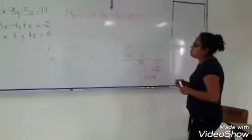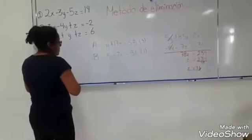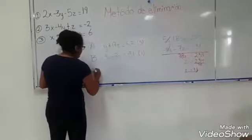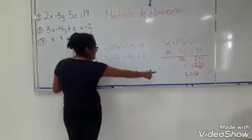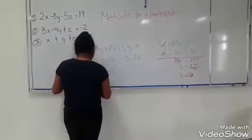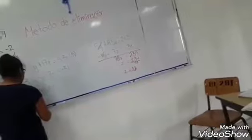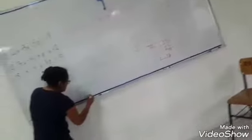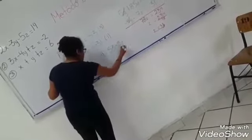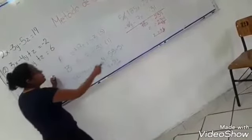Ya teniendo el valor de Z podemos sustituir en cualquiera de las dos ecuaciones. En este caso vamos a usar la ecuación A para encontrar el siguiente incógnito. Y es más 17 por 3 que vale Z es igual a 53. Más 17 por 3 son 51, que es igual a 53, y Y es igual a 53 menos 51, que es igual a 2. Entonces ya tenemos el valor de Y, que es igual a 2, y Z es igual a 3.